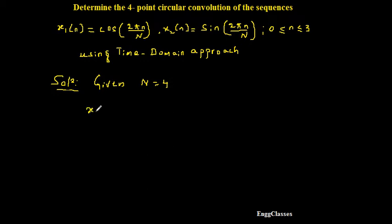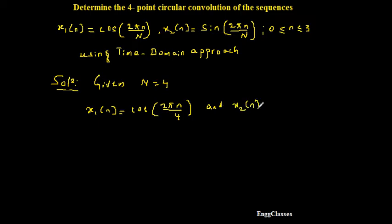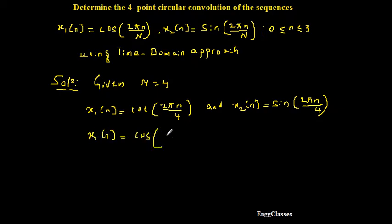So let me write x1(n) = cos(2πn/4) and x2(n) = sin(2πn/4). Simplifying, x1(n) = cos(πn/2) and x2(n) = sin(πn/2).